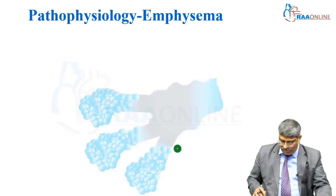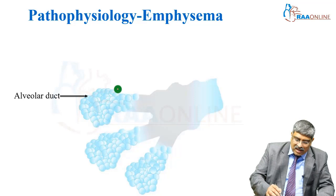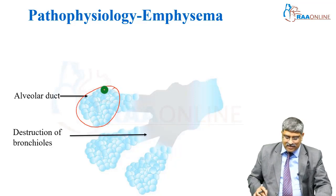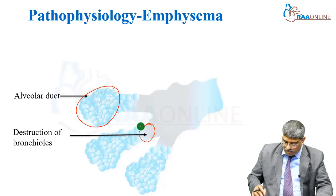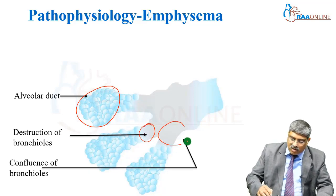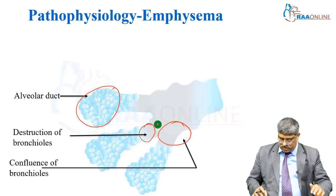Coming to emphysema, here you can have a dilated alveolar sac and destruction of the terminal bronchioles, with confluence of the bronchioles.